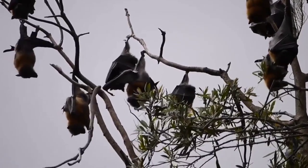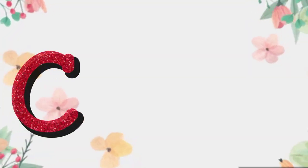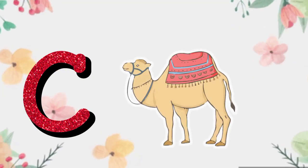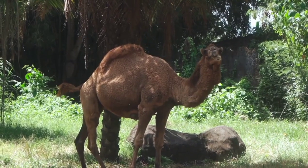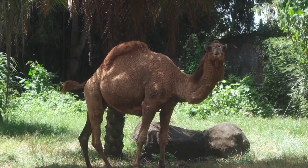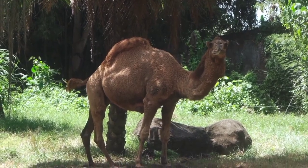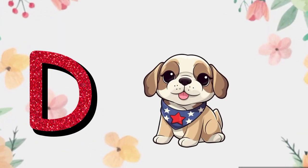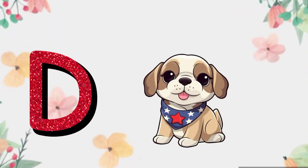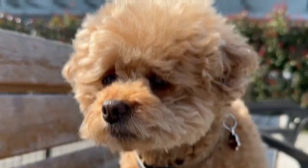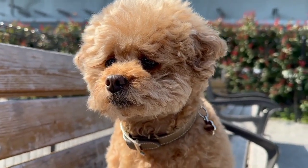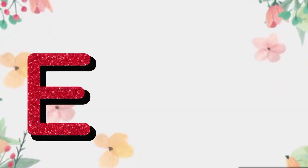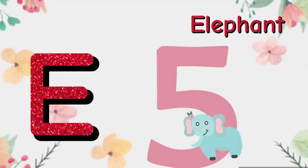C is for Camel. c-c-c-camel. C is for Camel. D is for Dog. d-d-dog. D is for Dog.